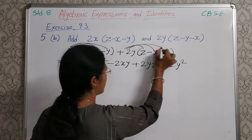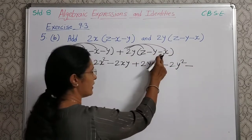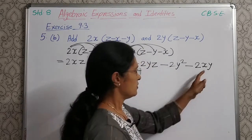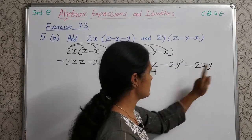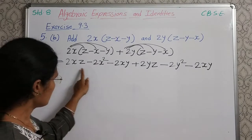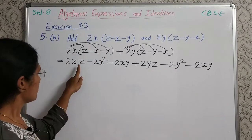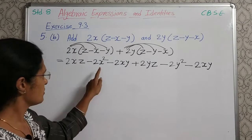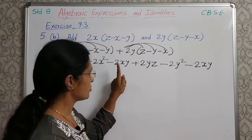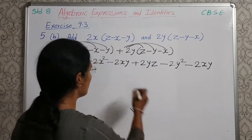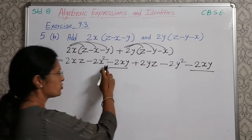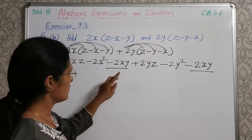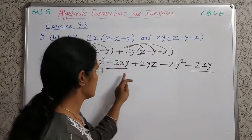Next, plus 2Y into minus X — plus minus — minus 2Y into X, so write the variables in alphabetical order: 2XY. Now, find whether there are like terms. Here XZ, but there is no other XZ term. X square, no like term. Now here minus 2XY and here also minus 2XY — XY variable here also XY. So you can solve these two. These are like terms, and the rest are unlike.